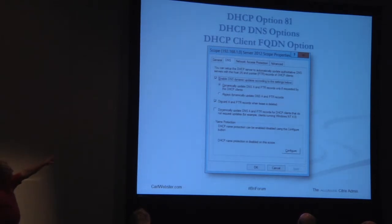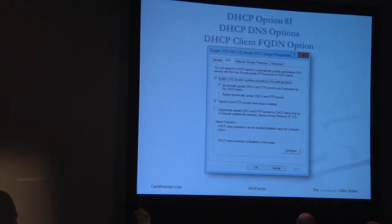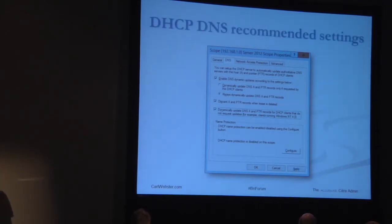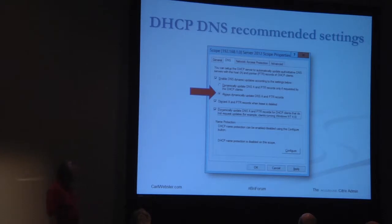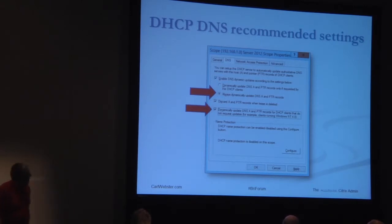By default, the client owns the DNS record — you don't want that; you want the DHCP service to own it. This is called DHCP option 81, also referred to as DHCP DNS options or the DHCP client FQDN option. Microsoft's recommended settings: have DHCP always dynamically update DNS A and PTR records, and dynamically update A and PTR records for older clients. According to Microsoft's documentation, this also covers Mac OS X, Linux, and Unix.